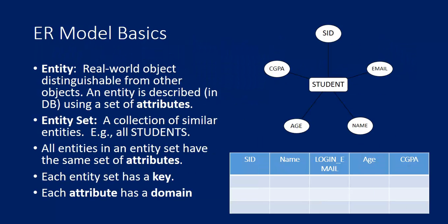An entity set is a collection of similar entities. For example, if there are five students in a table, that is an entity set. All entities in an entity set have the same set of attributes. Each entity set has a key, which allows us to uniquely identify one entity. Each attribute also has a domain — the domain is the range in which the value will remain. For example, the age of a student might have a domain of 15 to 35.